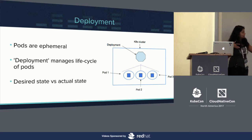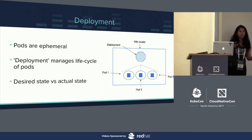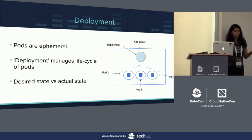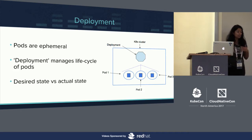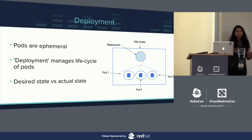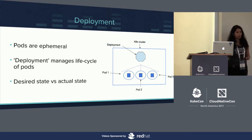We instead use a deployment — the Kubernetes deployment resource — to manage the lifecycle of these pods that we want our app to run on. The deployment resource takes as input the desired state of your app, which includes the image to be used and the number of pods you want to run. It then tries to make the actual state the same as the desired state. You can also specify the manner in which you want to update your application using this deployment resource.